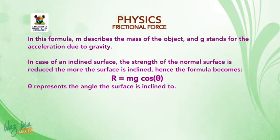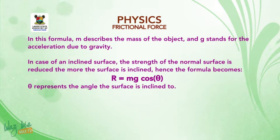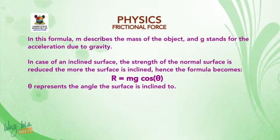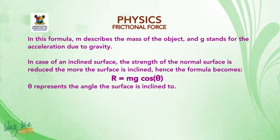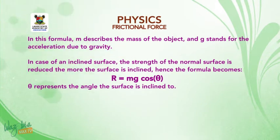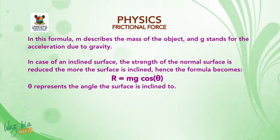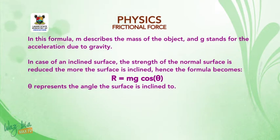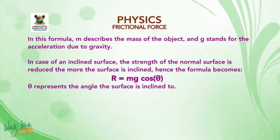The normal force R can be written as R = mg, that is mass times acceleration due to gravity. In this formula, M is the mass of the object and G is the acceleration due to gravity. In the case of an inclined surface, the strength of the normal force is reduced the more the surface is inclined. Hence the formula becomes R = mg cos θ, where θ represents the angle to which the surface is inclined.